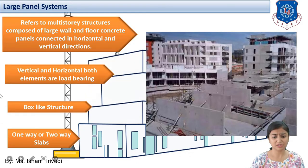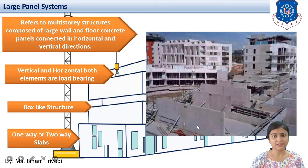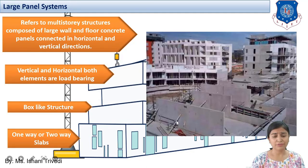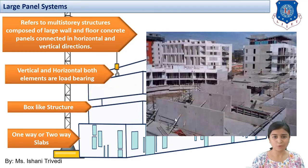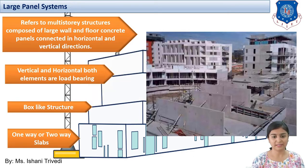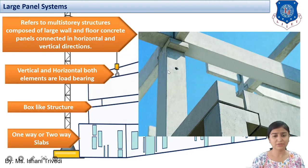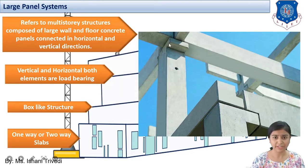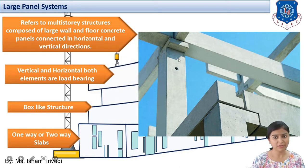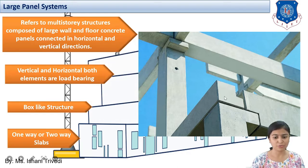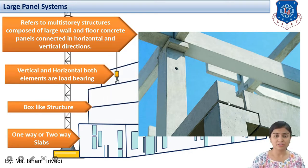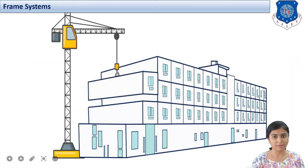You can see the ongoing construction here. These are your precast walls and the temporary bracings are provided. The formwork construction cost is going to be less overall in this system when you are constructing, not when you are casting the elements. The load bearing components will be vertical as well as horizontal, both. The slabs will be either one way or two way, and necessary joints and connections, bolts and ties will be provided. We will also discuss about the structural ties in the upcoming sessions.